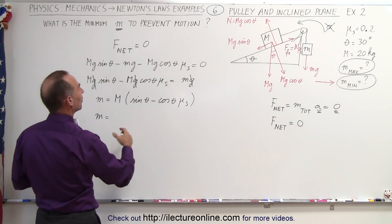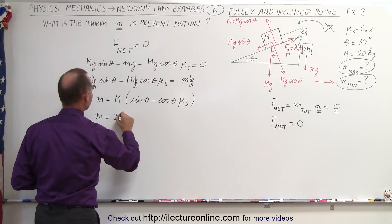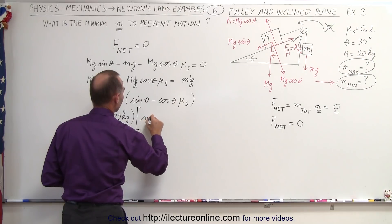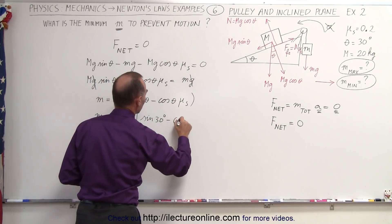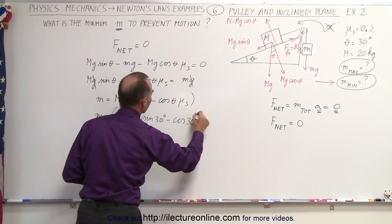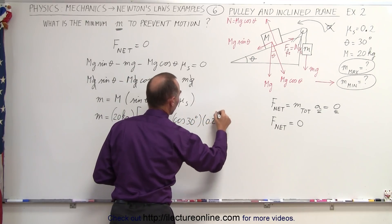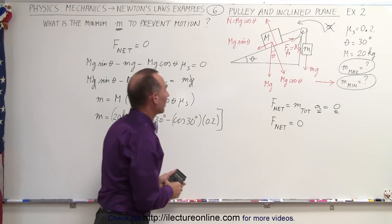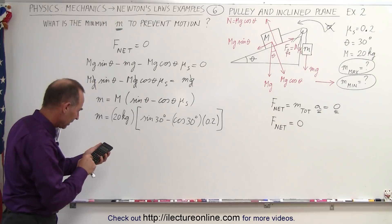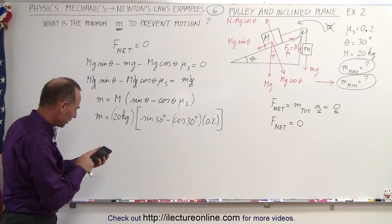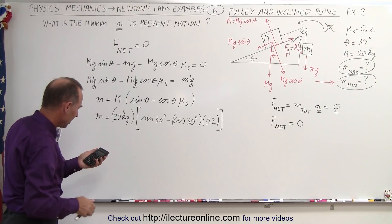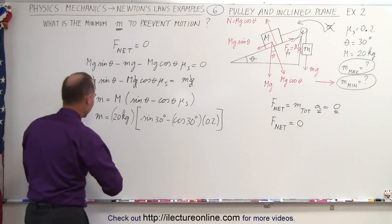The minimum mass equals big M times that expression. Plugging in the values: 20 kilograms multiplied by the sine of 30 degrees minus the cosine of 30 degrees multiplied by 0.2, the coefficient of static friction. We take cosine of 30 times 0.2, subtract that from 0.5 — the sine of 30 — and multiply by 20.